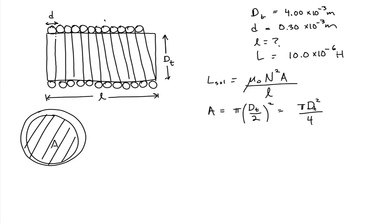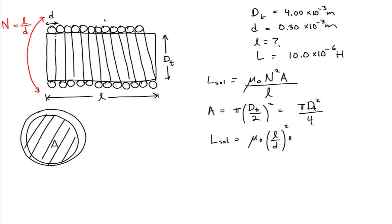The problem is we don't know the number of loops in the solenoid, but we do know the diameter of each wire and the total length of the tube. If we take the length of the tube divided by the diameter of each wire, that gives us the number of loops. So the inductance equals mu naught times (L / d_wire)² times π × D_T² / 4, divided by the length of the tube.